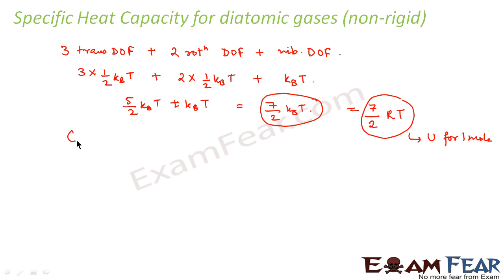So what is Cv, that is specific heat capacity at constant volume, that is dU by dT which is equal to 7 by 2 R.